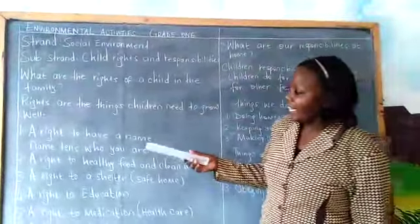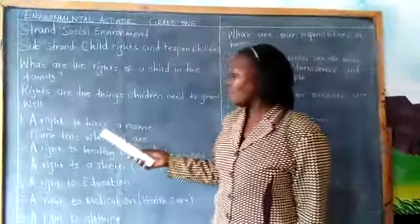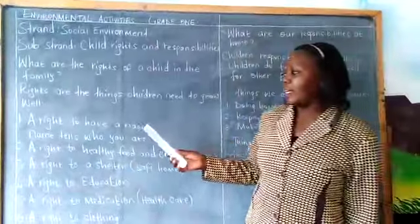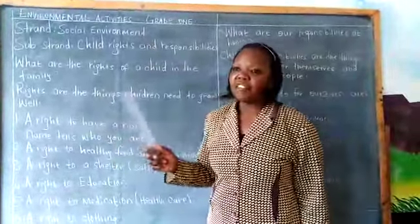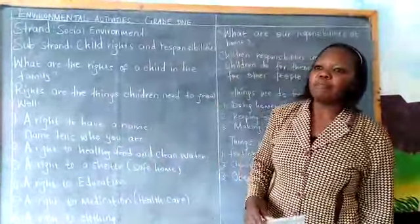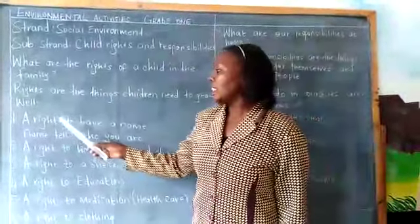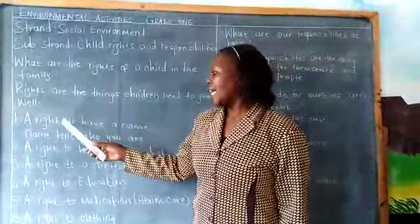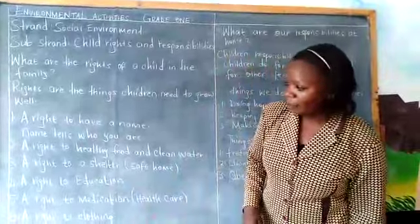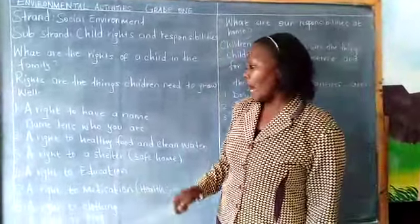And the rights are listed here. We have a right to have a name. Everybody must have a name. I know you have a name — myself, I have a name, I'm Catherine. So it is one of the rights of children to have a name, and a name tells who you are.